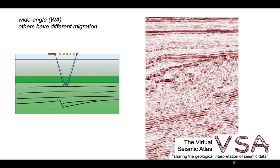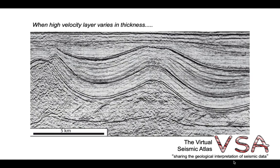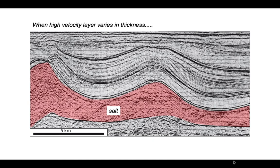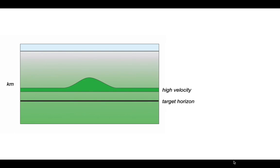But what happens when our high velocity layer varies in thickness, as we can see in this image from the North Sea? In this particular case, our high velocity layer is provided by salt, and you can see it varies in thickness. Going back to our cartoon — here's our simple world with seismic velocity increasing with depth — let's now put in a high velocity layer that has a bump, a thickened zone, rather like we saw in that image. Beneath this high velocity material, we have a target horizon.